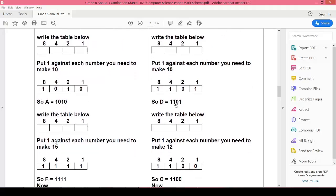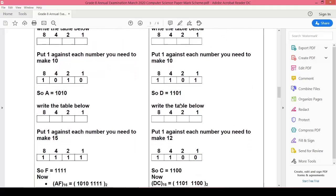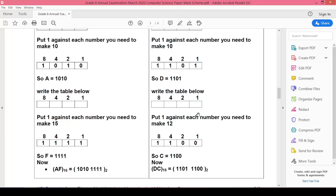So we'll put 1 here, 1 here, 1 here, and 0 here. So the answer is 1101. Now for the other one, for C, what you need for C? You need 8 and you need 4.